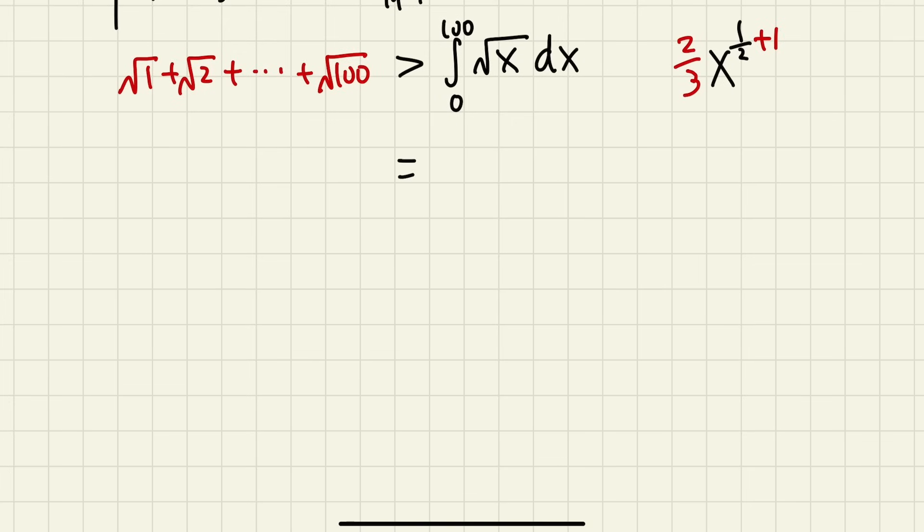So this will give us 2 over 3 x to the 3 over 2 power, and then we just have to go from 0 to 100. And then plug in the numbers here: we have 2 over 3 times 100 raised to the 3 over 2 power. When we plug in zero, that will give us zero, so it doesn't matter.